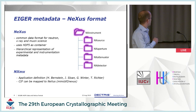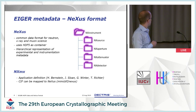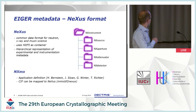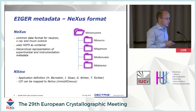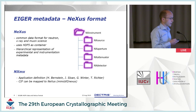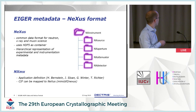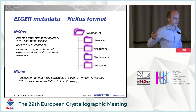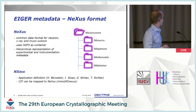For the metadata, we use the Nexus format. Nexus is basically a common data format for neutron, x-ray, and muon science — that's what the acronym stands for. It uses HDF5 as the container to put the data in. It's basically a hierarchical representation of the metadata, and this is schematically showing where you have almost a file system inside the container, like a file tree.